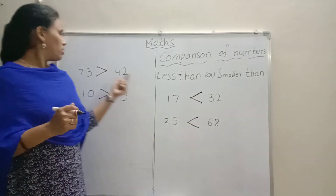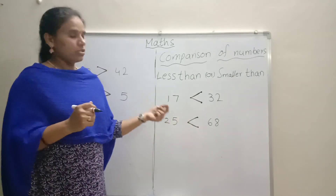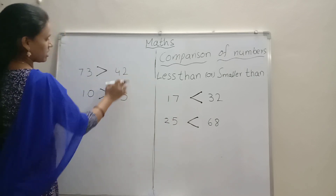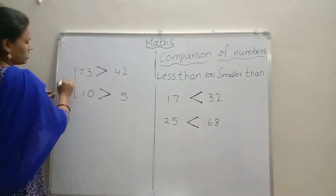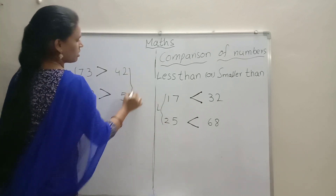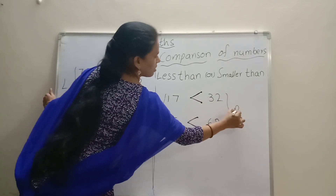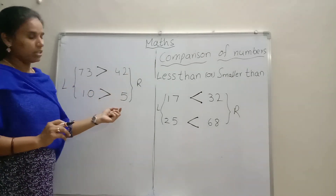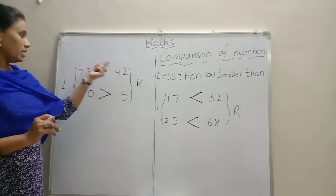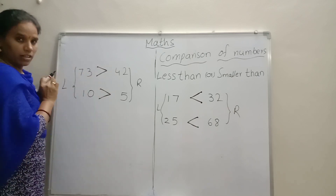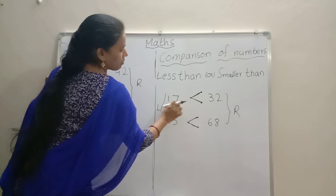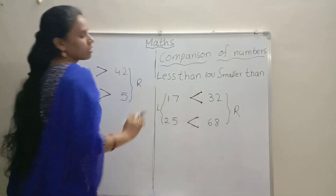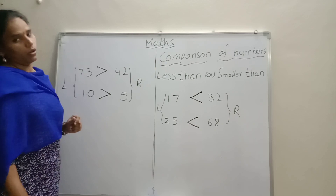Children, here don't confuse. Here is greater than and here is less than — don't confuse. Left side: if the left side number is bigger than the right side number, then we show greater than. Otherwise, if the left side number is always small, then we show less than. Okay children? It is very simple, don't confuse.